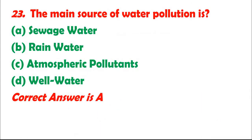Question 23: The main source of water pollution is: A. Sewage water. B. Rain water. C. Atmospheric pollutants. D. Well water. Correct answer is A.